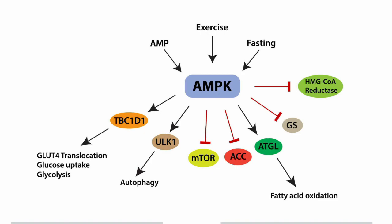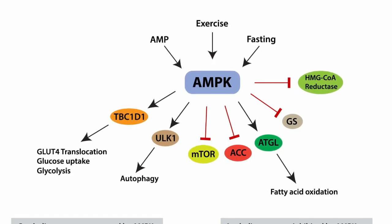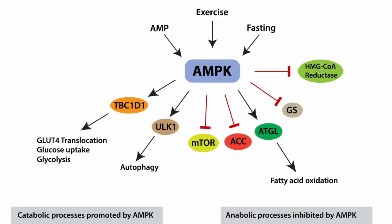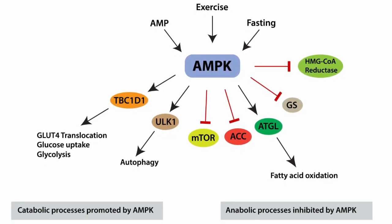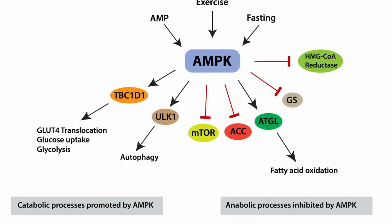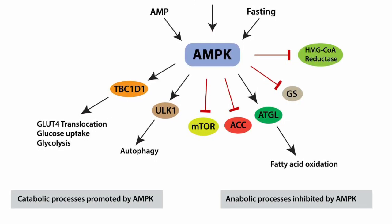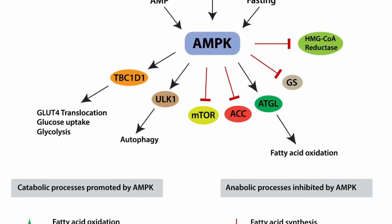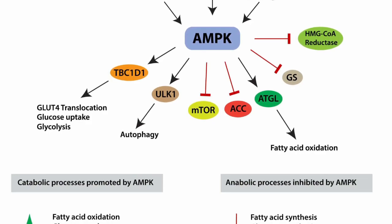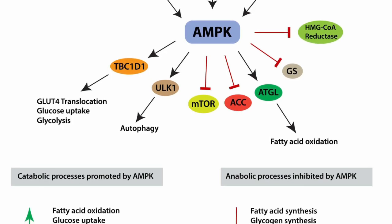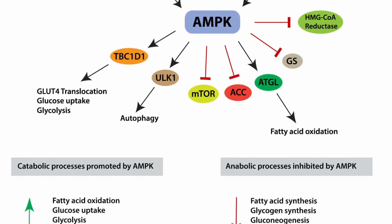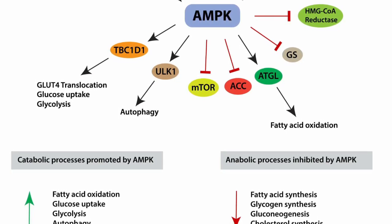AMPK, or AMP-activated protein kinase, is an enzyme that plays a crucial role in cellular energy homeostasis. It is often referred to as a cellular energy sensor because its activation is triggered by a high AMP to ATP ratio. AMPK is activated in response to a decrease in cellular energy levels, indicating that the cells need to conserve energy or generate more ATP. Once activated, AMPK promotes catabolic processes that generate ATP and inhibits anabolic processes that consume ATP. This AMPK pathway stimulates glucose uptake and fatty acid oxidation, whilst inhibiting glycogen and protein synthesis.